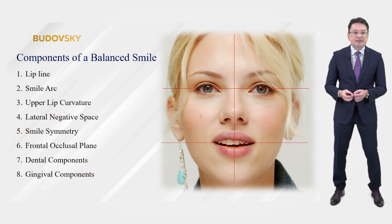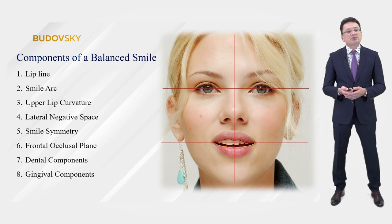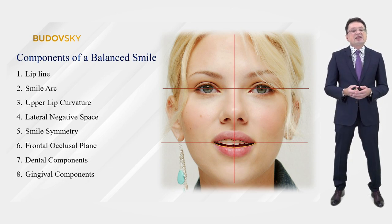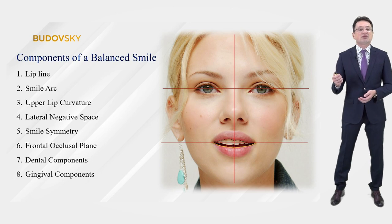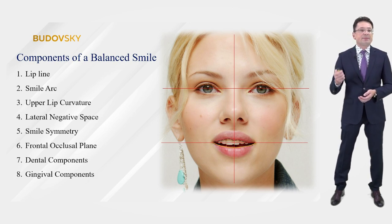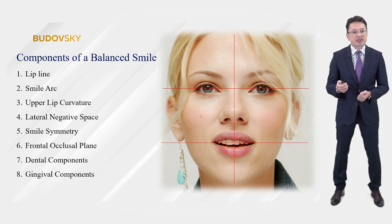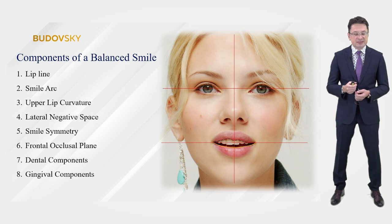The second part covers the components of a balanced smile. Here are eight components you should take into account in your work: lip line, smile arc, upper lip curvature, lateral negative space, smile symmetry, frontal occlusal plane, dental components, and gingival components.